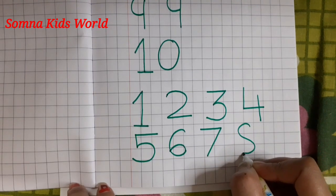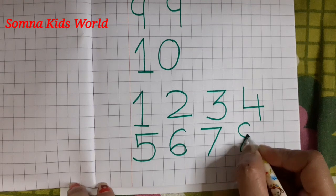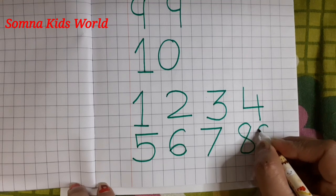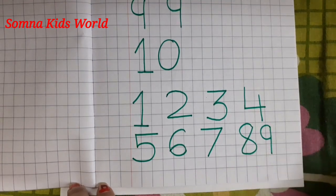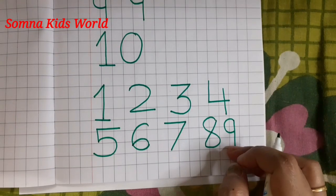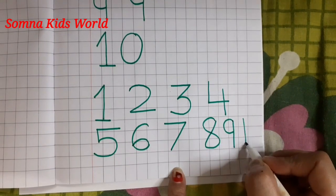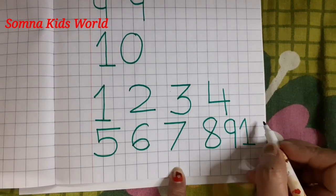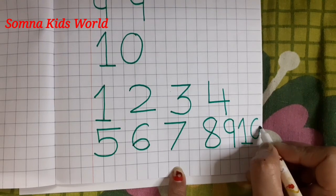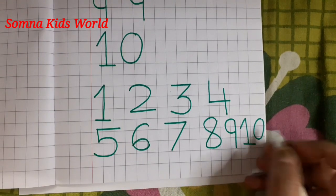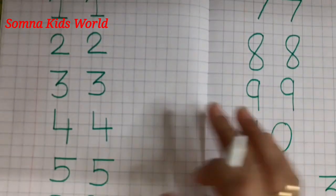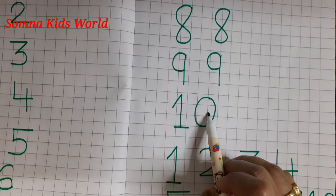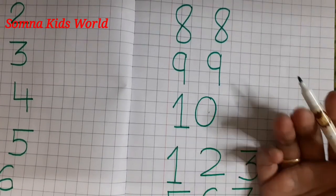After seven, eight: make a curve, then bring downward like an S, up, join here — number eight. After eight, nine: make a curve, standing line. After nine, ten: make a standing line, slanting line, slipping line — one — and then make a circle — number ten. So this is all about how to write numbers from number one to ten. I hope this video will be helpful for you.